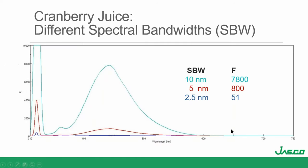Let's look at each of these and see what kind of impact it has on spectra. In this example with the cranberry juice solution, trying different bandwidths — 10, 5, and 2.5 nanometers — shows a huge difference in fluorescence signal. It's kind of hard to see any difference in resolution here, as anthocyanins in cranberry juice tend to produce a very broad, featureless spectrum.